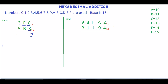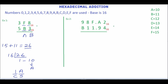F is equivalent to 15 and B is equivalent to 11. 15 plus 11 is 26. Since 26 is not a hexadecimal number, we convert it by dividing 26 by the base of hex, which is 16. The quotient is 1 and the remainder is 10. 10 is equivalent to A, so the hexadecimal equivalent is 1A. In this, A is the sum and 1 is the carry. Write down the sum A and write the carry 1.